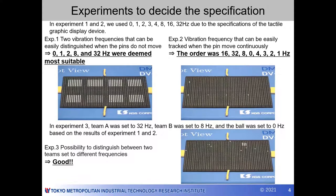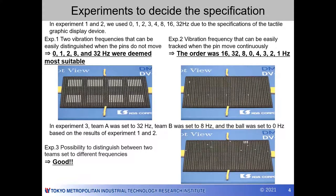Finally, it was verified as to whether the participants could distinguish between the two teams designated by different frequencies, based on the results of experiments one and two. Team A was set to 32 hertz, team B was set to 8 hertz, and the ball was set to 0 hertz. From the experiment, six of the seven participants were able to identify each team member.